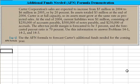Use this information to answer Problem 14-1, which says: use the AFN formula and forecast how much additional funds the Carter Corporation will need.